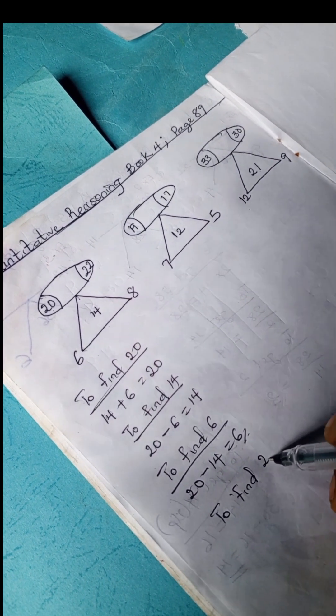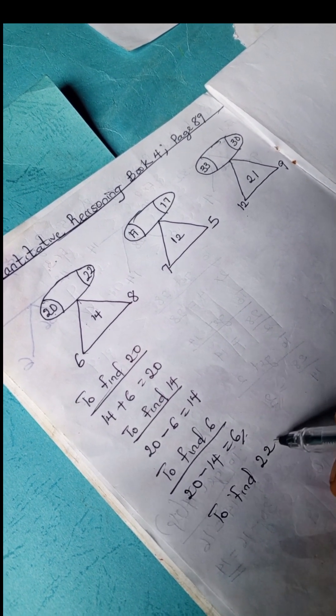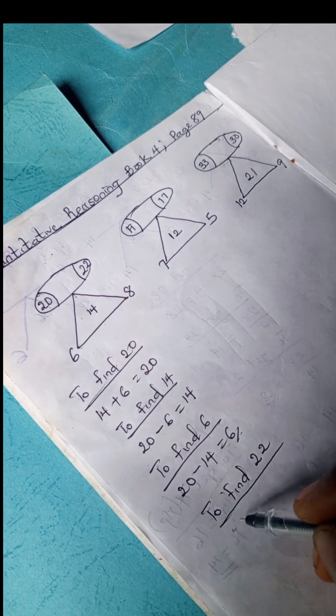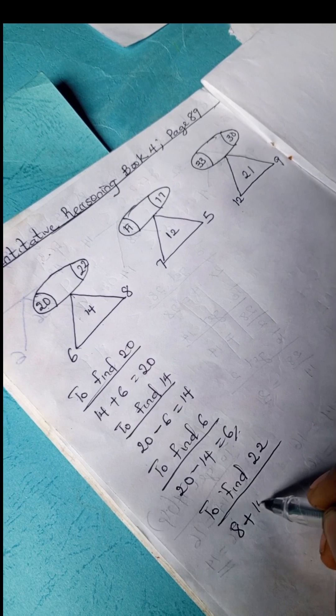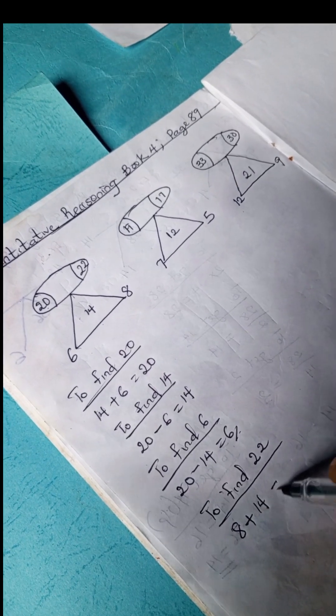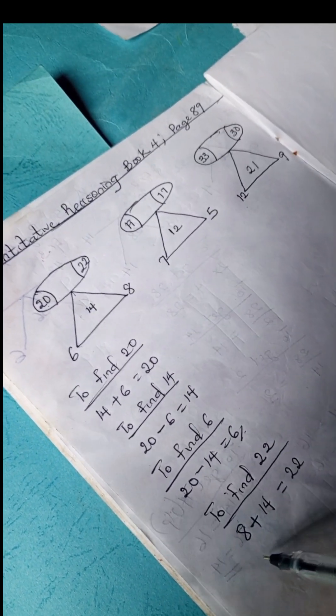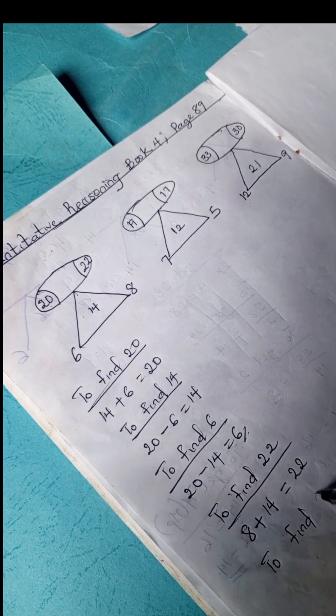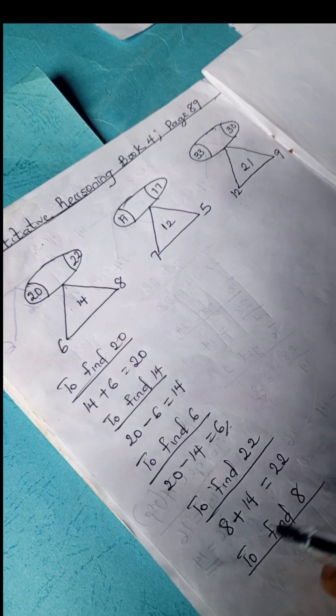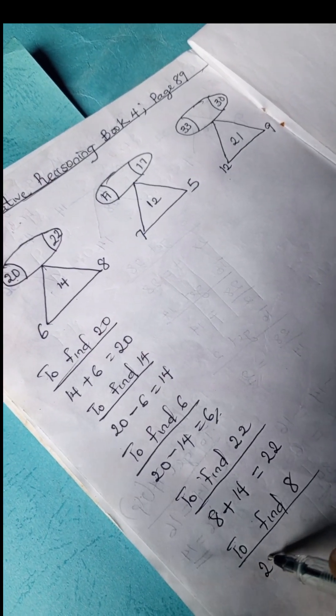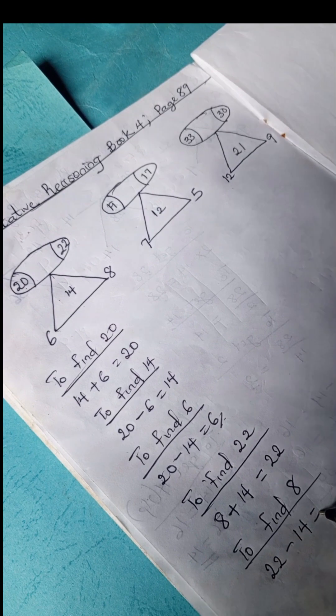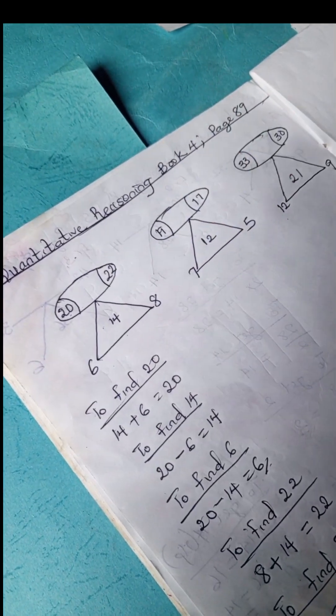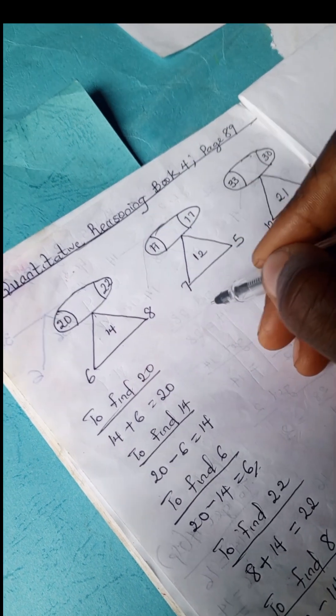To find 22, 12, we can have 8 plus 14 equals 22. And to find 8, we have 22 minus 14 equals 8. Okay, so we can also do the same for this example.